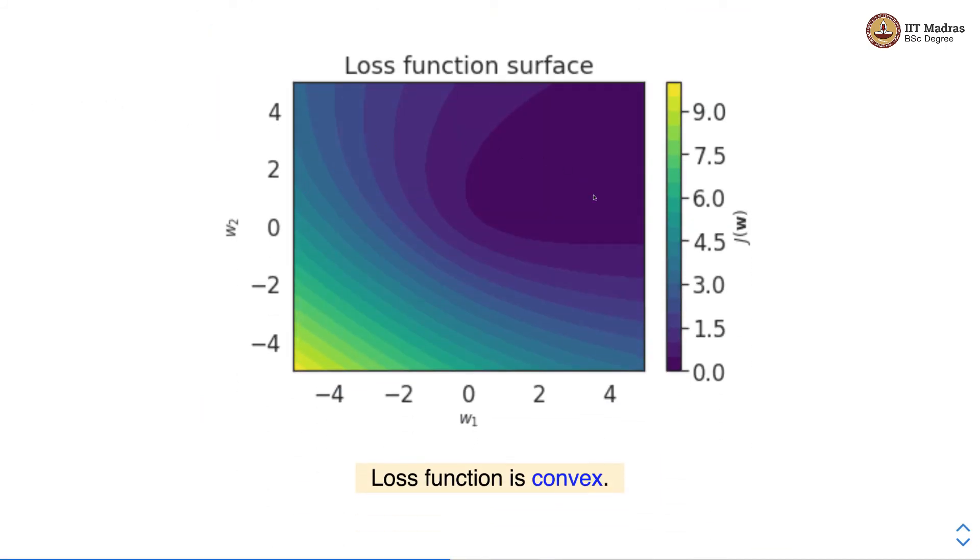So this is how the binary cross entropy loss looks like. The binary cross entropy loss is a convex loss function.